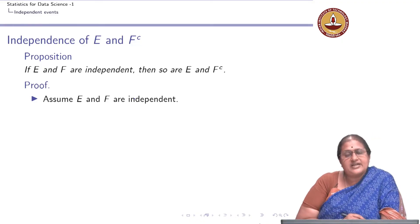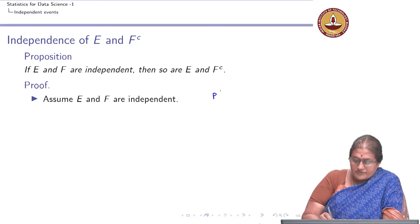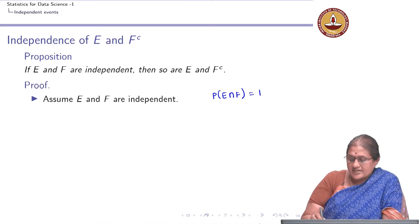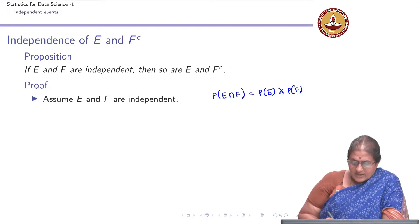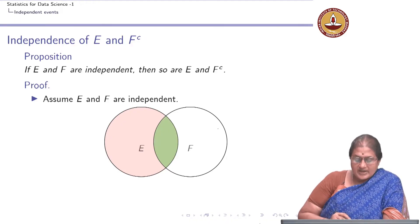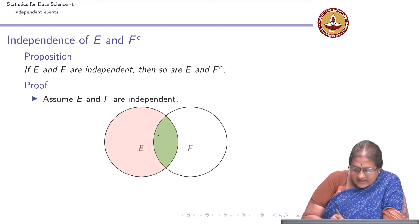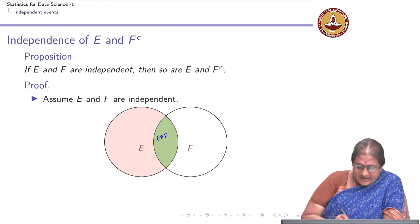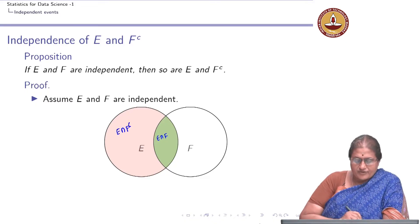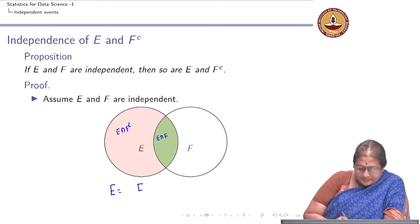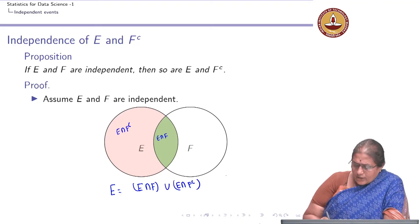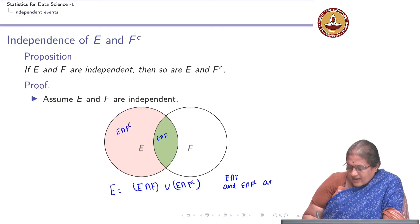Assume E and F are independent. If E and F are independent, we have that probability of E intersection F equals probability of E times probability of F. Now, looking at this Venn diagram, the green area is E intersection F and the pink area is E intersection F complement. So I can write E as the union of E intersection F and E intersection F complement. Notice that E intersection F and E intersection F complement are disjoint, or mutually exclusive.